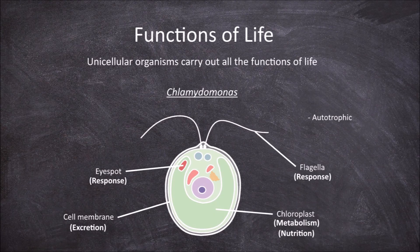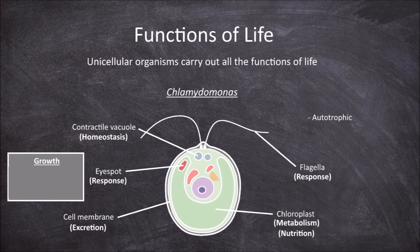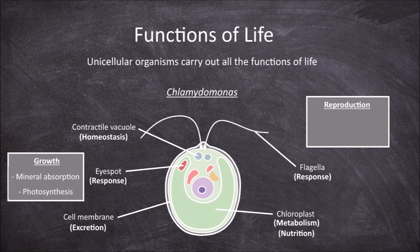They have contractile vacuoles that are able to move water out through the cell membrane to maintain stable water levels within the cell. They grow by absorbing minerals from the environment and through photosynthesis, continuing to grow until they reach a size that affects their surface area to volume ratio, where they divide via asexual reproduction.